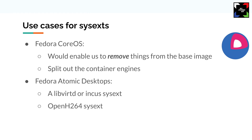A major use case for sysext in Fedora CoreOS we're likely to investigate is removing container runtimes from the base system — just like Flatcar did — moving Moby Engine, Docker, and Podman outside the base image so you can swap or disable them. On the desktop side, a recurrent problem is codecs or NVIDIA drivers that have legal constraints preventing us from shipping them in the OS. Building those into system extensions could help us extend image-based systems like the atomic desktops.